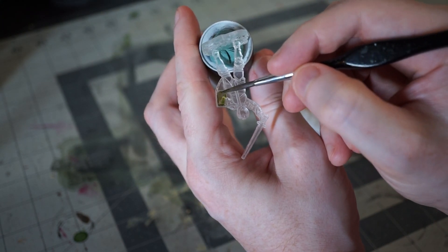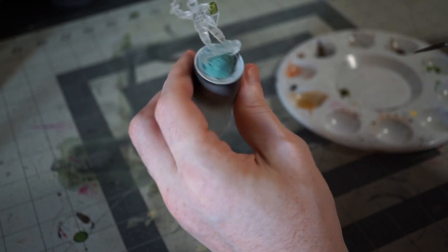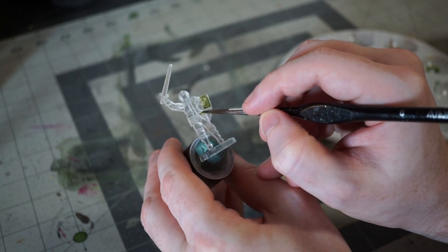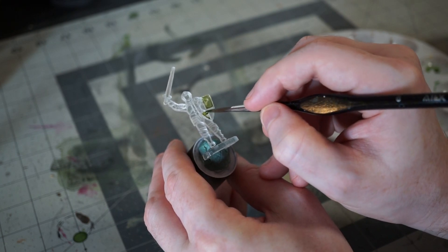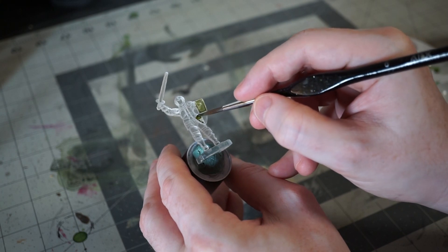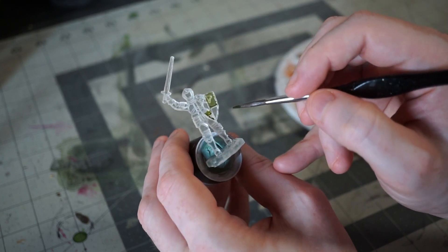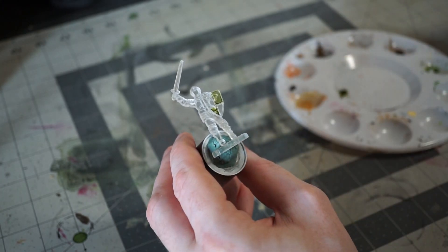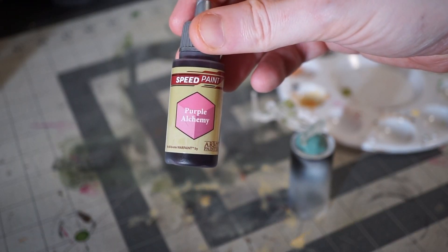Interestingly, I did notice the model is a bit hydrophobic, which surprised me because I had washed it in warm soapy water first. Usually hydrophobia is the result of release agents still being on the model and a quick wash gets rid of them. So I don't know if this is a quirk of the translucent material or something else, but it's not that big of a deal. Just keep working the paint into the corners and eventually you'll be able to make it stick where you want it.